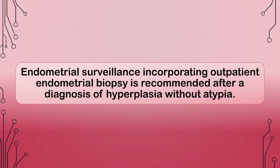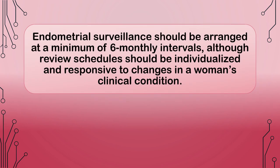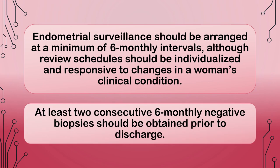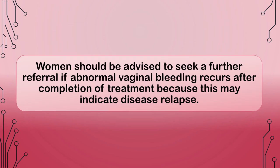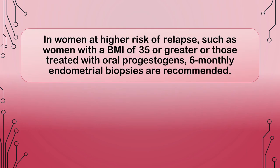Endometrial surveillance incorporating outpatient endometrial biopsy is recommended after a diagnosis of hyperplasia without atypia. Surveillance should be arranged at a minimum of 6-monthly intervals, although review schedules should be individualized and responsive to changes in a woman's clinical condition. At least 2 consecutive 6-monthly negative biopsies should be obtained prior to discharge. Women should be advised to seek a further referral if abnormal vaginal bleeding recurs after completing treatment, as this may indicate disease relapse. In women at higher risk of relapse, such as those with a BMI of 35 or greater or those treated with oral progestogens, 6-monthly endometrial biopsies are recommended.